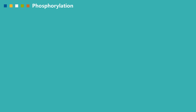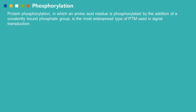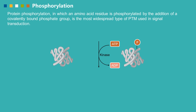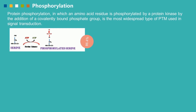Protein phosphorylation, in which an amino acid residue is phosphorylated by the addition of a covalently bound phosphate group, is the most widespread type of post-translational modification used in signal transduction. Phosphorylation is performed by kinases, and dephosphorylation is performed by phosphatases, which play opposite roles in eukaryotic cells.